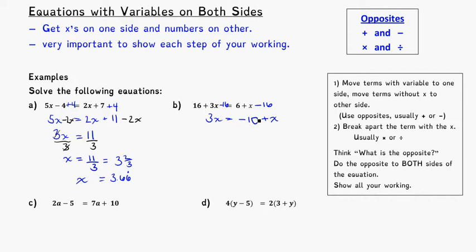For my next step, I want to think about getting all the x's on one side of the equation. There's a positive x — remember that's a 1x. So if I do minus x on both sides, plus x minus x cancel, leaving me with negative 10 on the right. And 3x minus x, which is 3x minus 1x — remember the little invisible one there — leaves me with 2x. So 2x is equal to negative 10.